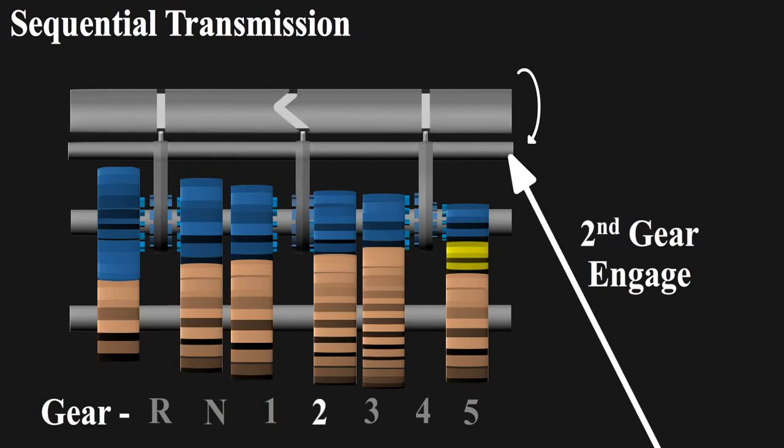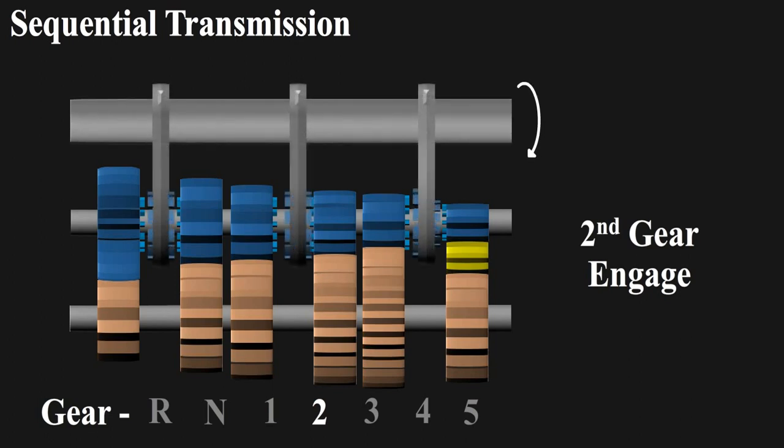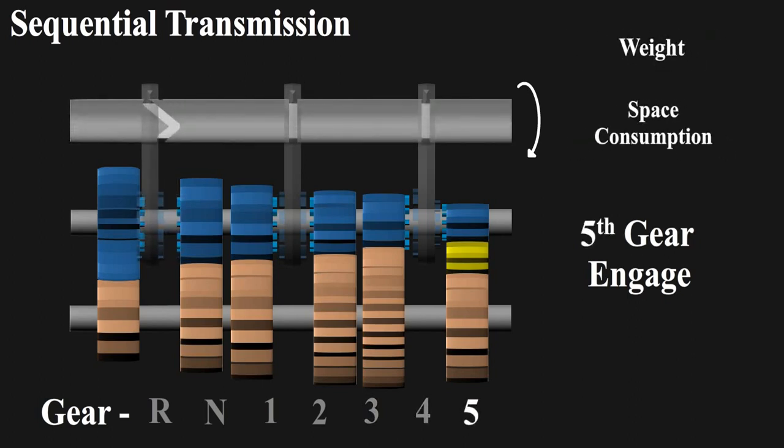In some gearboxes, this shaft is eliminated, and the shaft with grooves is directly used here. The fork now slides on the grooved shaft. The pins which protruded from outside now protrude from inside. The working remains the same, while we get an added advantage of decreased weight and space consumption due to reduction of one shaft.